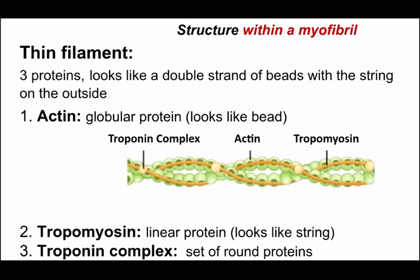You have two strands of actin molecules. Then there are two thread-like molecules of a light brown color called tropomyosin — 'tropo' meaning change. It's like a strand of beads that's been twisted, with the thread on the outside. Finally, we have the troponin complex, drawn here as a single bead that sits on top of the tropomyosin.